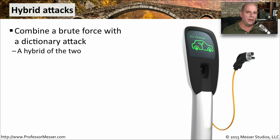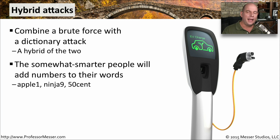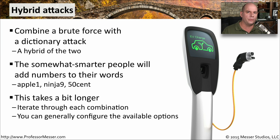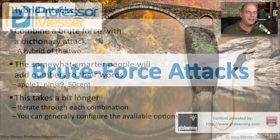Sometimes people think that combining a well-known word with one or two special characters would fool the bad guys, but they already know about this. They use something called a hybrid attack against those kinds of passwords. They'll take a word like 'apple' and put a '1' in front of it, or append '2' or '123,' trying every combination of that word with those characters. Maybe it's something like 'Ninja9' or '50Cent' — adding additional characters or replacing letters with numbers. This takes a little longer than a straight dictionary attack, but it's still much faster than trying every possible combination. The attacker has software that lets them customize exactly what will be tested, so they can find those passwords with the hybrid attack.